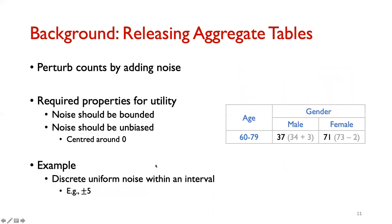The solution is to perturb counts by adding noise. For utility, the noise needs certain properties: it should be bounded so that noisy answers don't deviate arbitrarily from true answers, and it should be unbiased so that accumulated noise across many queries doesn't deviate arbitrarily from the true answer. An example of such a noise distribution is a uniform noise distribution within an interval, say plus or minus five.